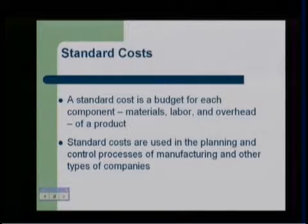We go through and figure out how much it should cost us in materials, how much it should cost us in labor, how much it should cost us in overhead, and then we can come up with a standard cost or a budgeted cost for that item. There are a number of ways we can come up with those budgeted costs, but typically we get with the engineers and the accountants and come up with an estimate. The better we can get these estimates, the more useful they're going to be in our budgeting, control, and planning process.